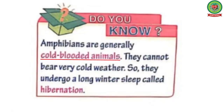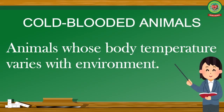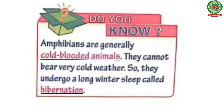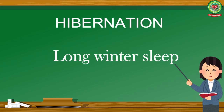Let us read 'Do You Know.' Amphibians are generally cold-blooded animals. Underline 'cold-blooded animals' — its definition is animals whose body temperature varies with the environment. They cannot bear very cold weather, so they undergo the process of hibernation. Underline 'hibernation' — its definition is long winter sleep.